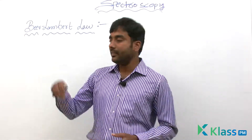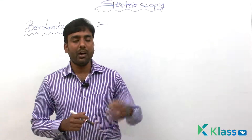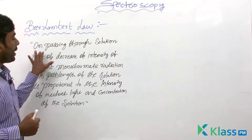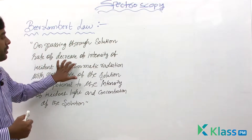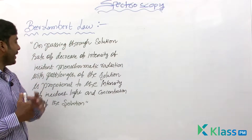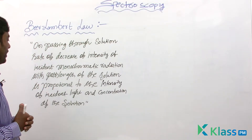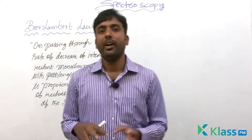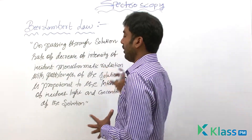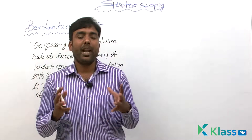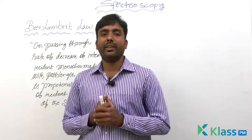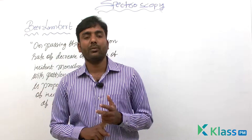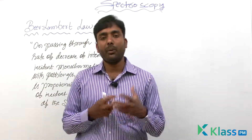We will now see the definition of Beer-Lambert's Law. On passing through a solution, the rate of decrease of intensity of an incident monochromatic radiation with path length of the solution is proportional to the intensity of incident light and the concentration of the solution. It is a combination of Beer's and Lambert's Laws. Simply stated, the decrease in intensity depends on the path length or thickness of the absorbing medium, and the concentration of the absorbing medium.